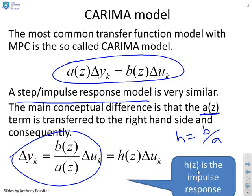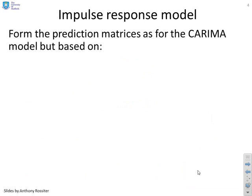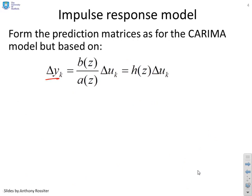Clearly, h(z) here represents the impulse-response of the system, not the step-response. So I can write Δy equals the impulse-response h(z) times Δu. What we want to do now is say, can I form the prediction matrices using exactly the same technique as I did in the previous video with the CARIMA model?